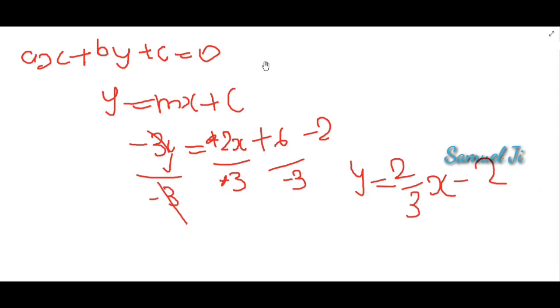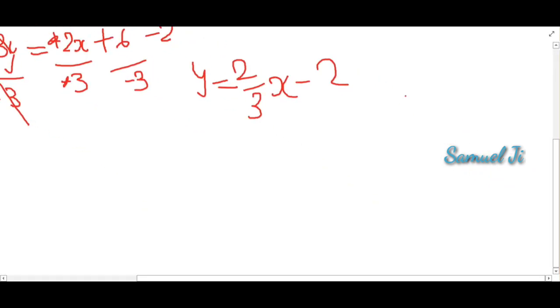So here you can see the slope. The slope is m equal to, this is the slope, 2 divided by 3. Simple as that.